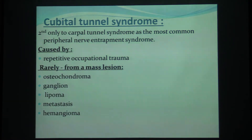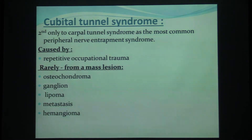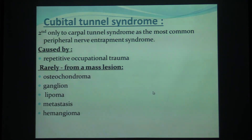My take-home message is that cubital tunnel syndrome is a very important entity, coming second only to carpal tunnel syndrome. It's usually caused by repetitive occupational trauma, but rarely it's caused by a mass lesion, as in our case. It could be different lesions such as osteochondroma, ganglia, lipoma, metastasis, and like in our case, hemangioma. Thank you very much.